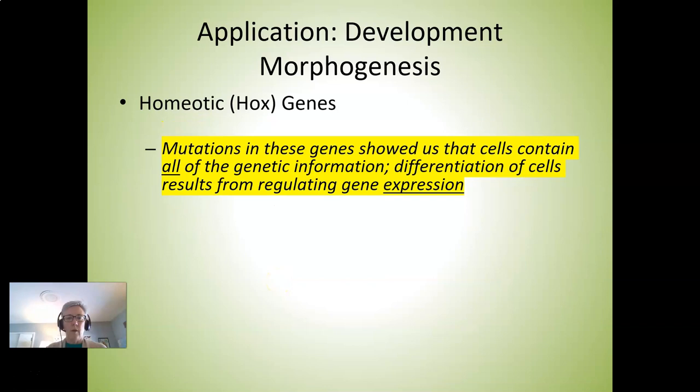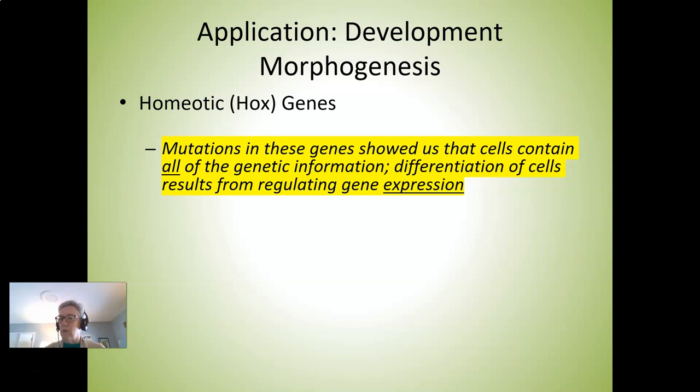The big picture here is that mutating HOX genes and finding mutations in other genes has taught us that our cells contain all of the genetic information, but it's how that genetic information is controlled in different cells — regulation of gene expression — that determines the end product.